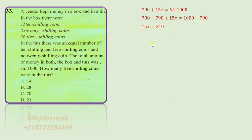We divide by 15 on both sides so that on the left we have x, and on the right we have 14. In other words, we have 14 pieces of five-shilling coins.